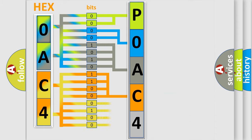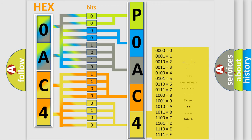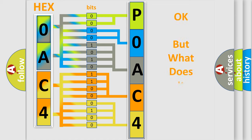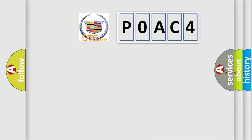A single byte conceals 256 possible combinations. We now know in what way the diagnostic tool translates the received information into a more comprehensible format. The number itself does not make sense to us if we cannot assign information about what it actually expresses.